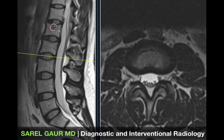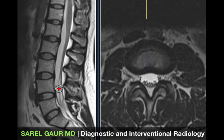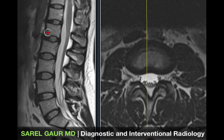I can see high signal surrounding the central canal region and high signal in the fat. I like to start with the sagittal set of images and go from front to back.